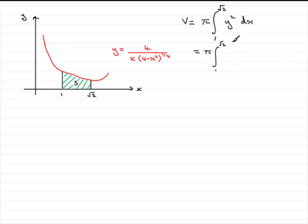So what you're going to have is 4 squared which is going to be 16, all over x squared and then if you square 4 minus x squared to the power of quarter you're going to end up with 4 minus x squared to the power of half. In other words the square root of 4 minus x squared with respect to x.